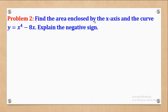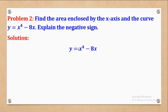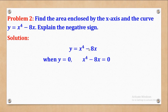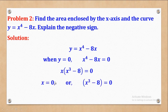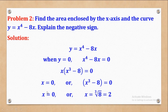Problem 2: find the area enclosed by the x-axis and the curve y = x⁴ - 8x, and explain the negative sign. We are given the curve y = x⁴ - 8x. The first thing is to get the intercepts. When y = 0, the whole expression equals 0. We factorize to get x = 0, and for the other factor equal to 0, x equals the cube root of 8, which is 2. So I have got the two intercepts: 0 as the lower limit and 2 as the upper limit.